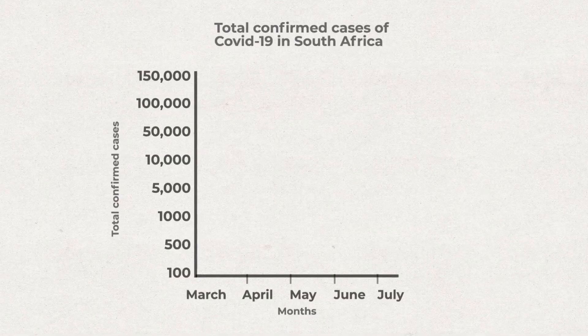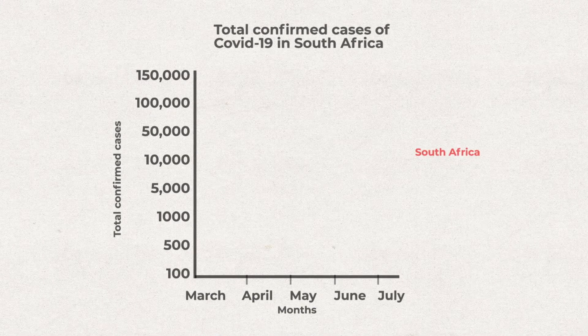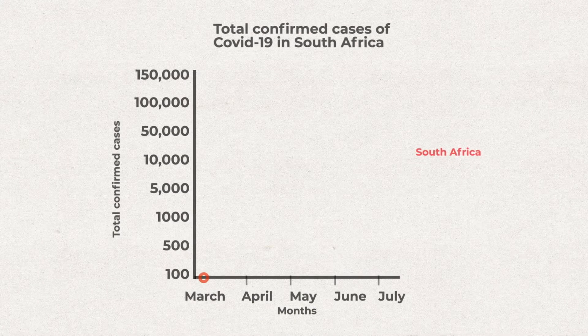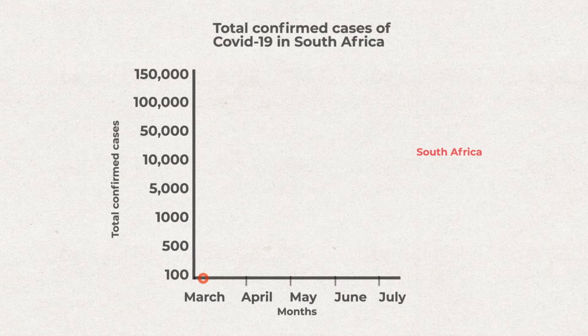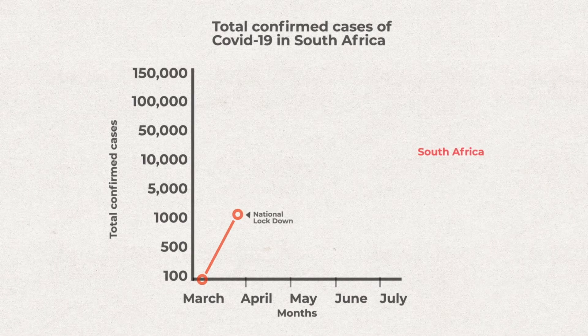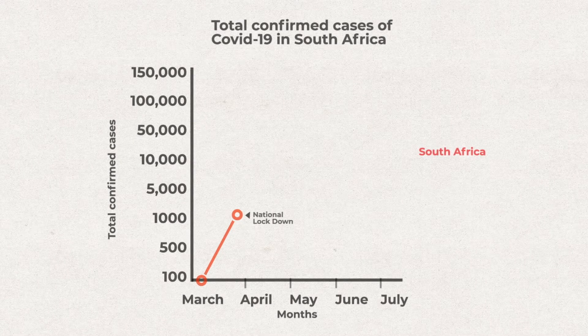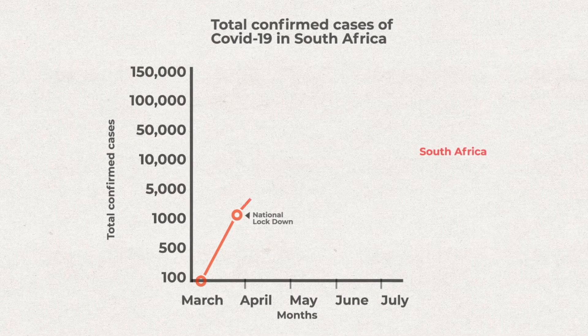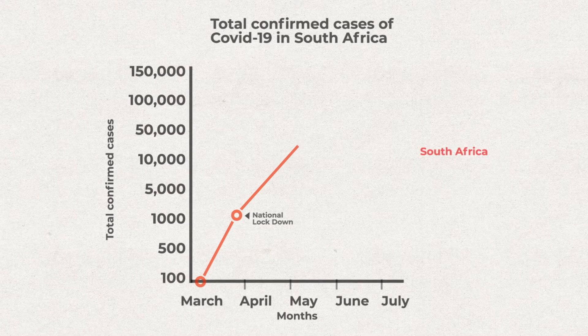South Africa recorded its first case of COVID-19 on the 5th of March 2020. By the time a national lockdown had been declared on the 27th of March, this number had already grown to 1,170. Despite the social distancing this lockdown enforced, infections continued to spread,